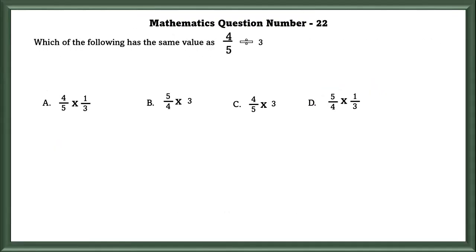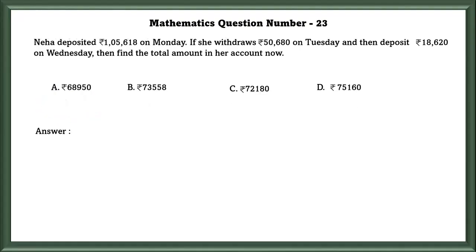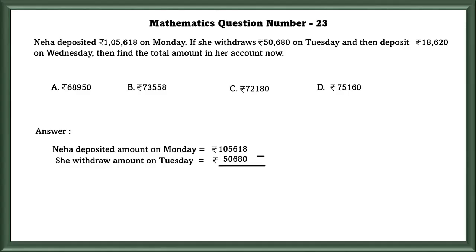Mathematics question number 22: Which of the following has the same value as 4/5 divided by 3? To solve this, we find the reciprocal of the divisor. The reciprocal of 3/1 is 1/3. Then we multiply the dividend by the reciprocal of the divisor. So our answer is option A.